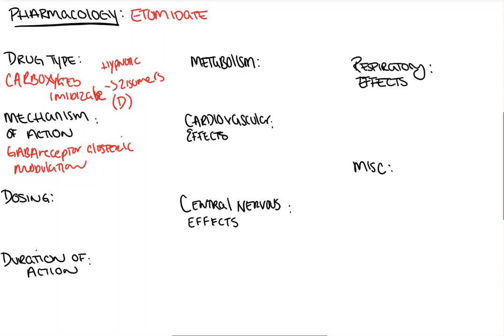The drug is dosed at about 0.2 to 0.3 milligrams per kilogram, which is the same as 20 to 30 percent of a patient's body weight. So to make it simple, a 100-kilo individual would get 20 to 30 milligrams for induction. Like propofol, the drug lasts for about three to eight minutes — quick onset, quick offset.